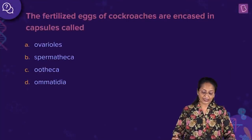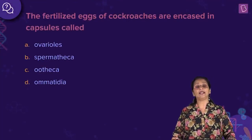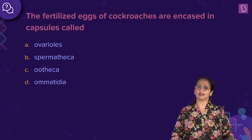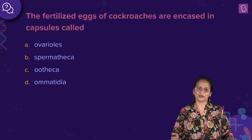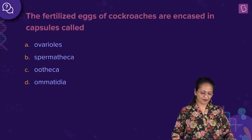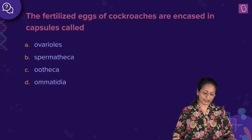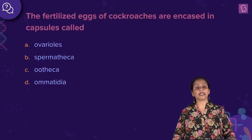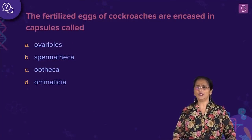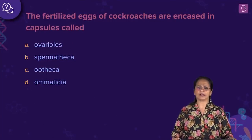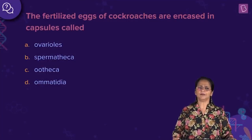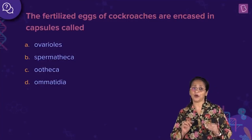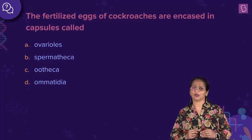The fertilized eggs of cockroaches are encased in a capsule called — complete the sentence. Is it the ovarioles, the spermathecae, oothecae, or ommatidia? Some cockroaches, when running around, you would notice towards the posterior end of their body there is a dark brown structure jutting out.